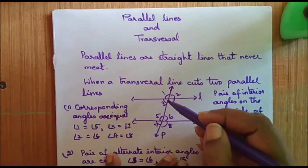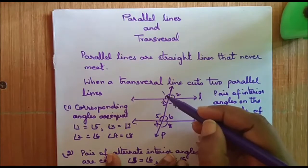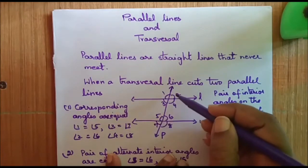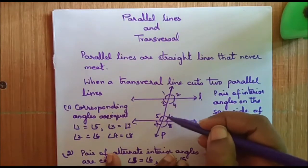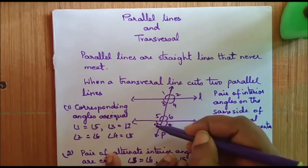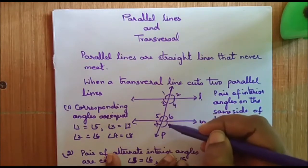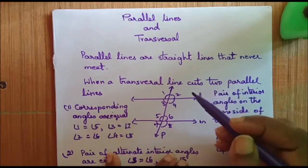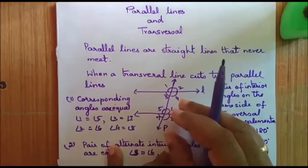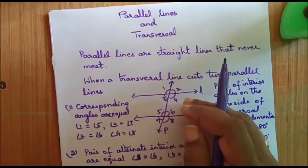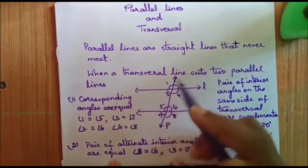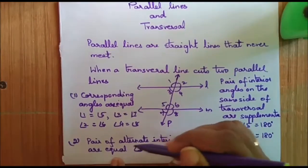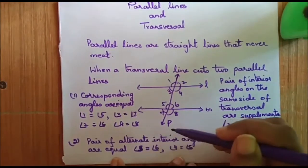So they are called corresponding angles: 1 and 5, 2 and 6, 3 and 7, 4 and 8. One more property is that the pair of alternate interior angles are equal.